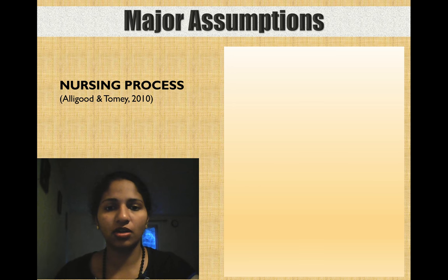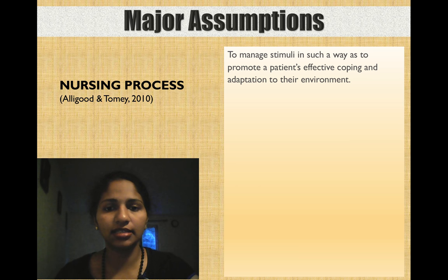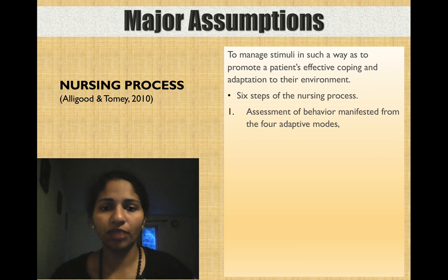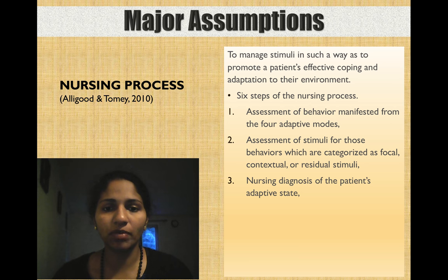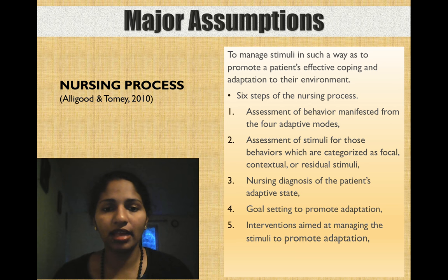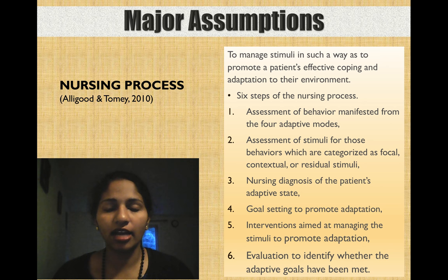Now we will look into Roy's explanation of the nursing process. According to the Roy adaptation model, the focus of nursing interventions is to manage stimuli in such a way as to promote a patient's effective coping and adaptation to their environment. The model proposes six steps: assessment of behaviors from the four adaptive modes; assessment of stimuli categorized as focal, contextual, or residual; nursing diagnosis of the patient's adaptive state; goal setting to promote adaptation; interventions aimed at managing stimuli to promote adaptation; and evaluation to identify whether the adaptive goals have been met.